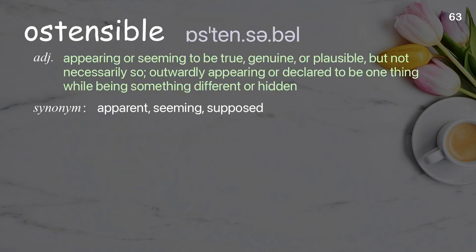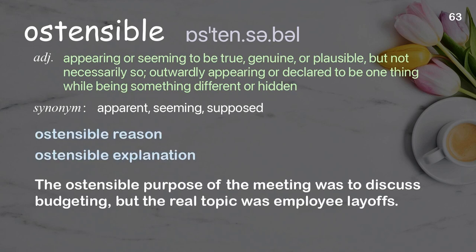Ostensible: Appearing or seeming to be true, genuine, or plausible, but not necessarily so. Outwardly appearing or declared to be one thing while being something different or hidden. Examples: Ostensible reason, ostensible explanation. The ostensible purpose of the meeting was to discuss budgeting, but the real topic was employee layoffs.